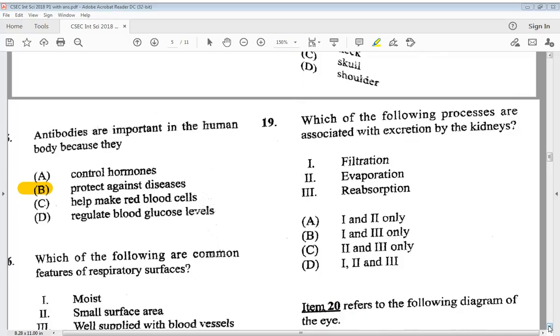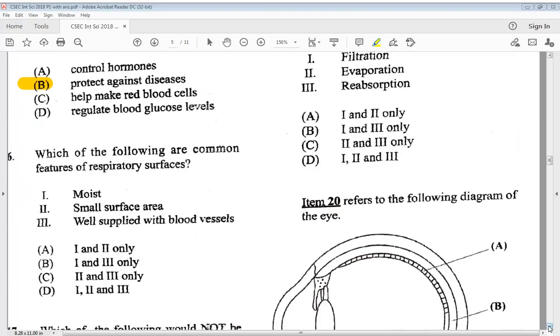Let's go to number 16. Which of the following are common features of respiratory surfaces? One, moist. Two, small surface area. Three, well supplied with blood vessels. So our answer options are A, one and two only. B, one and three only. C, two and three only. Or D, one, two and three. So we know the answer is B, one and three only.